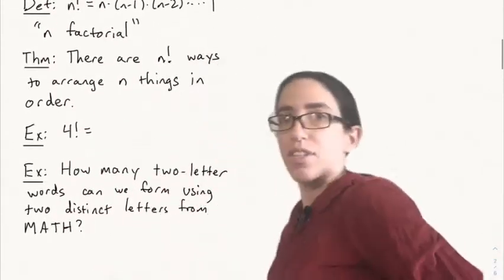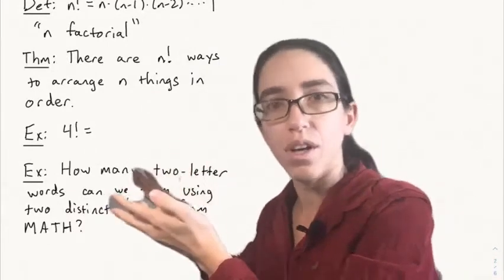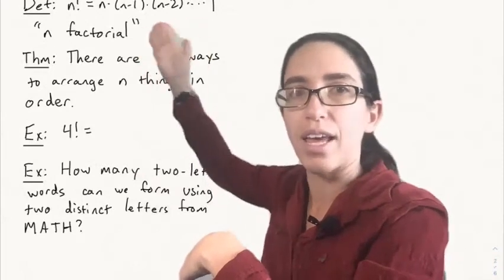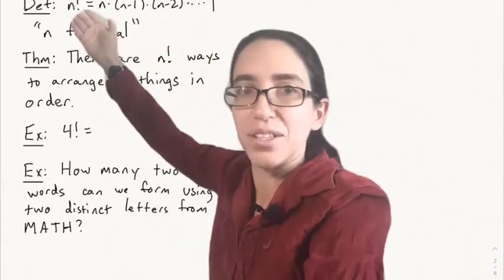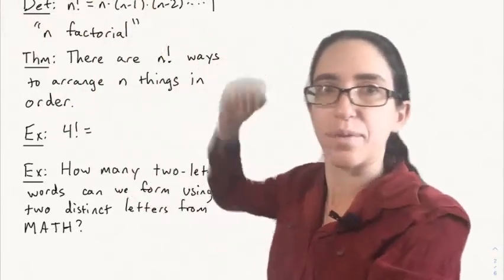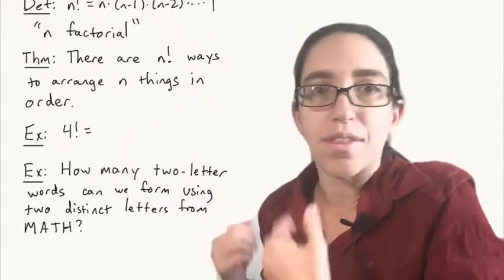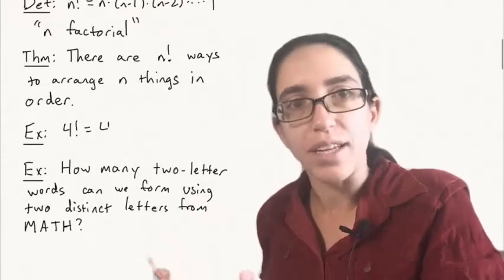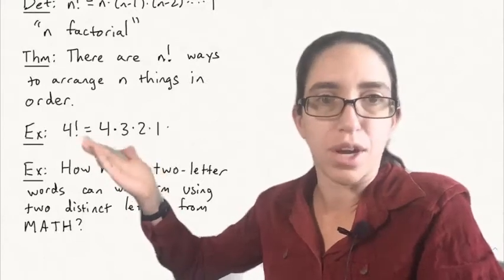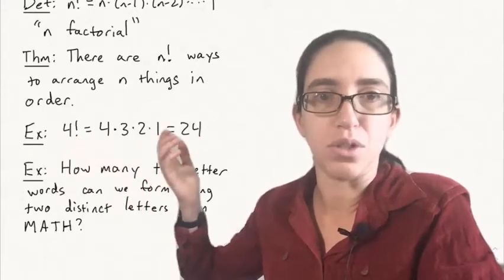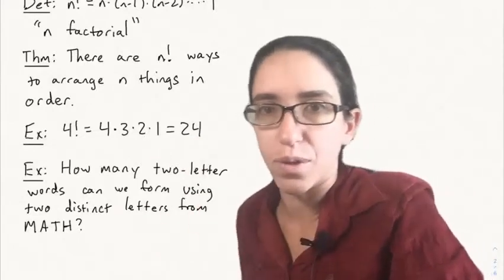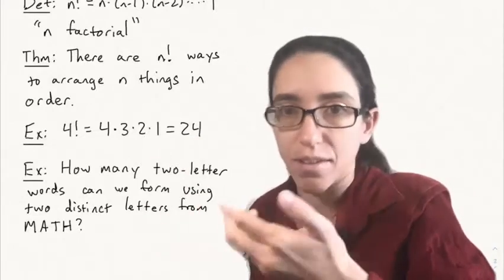So that saves us a lot of work. It's so important that we give it its own symbol. We define N factorial — written N with an exclamation point, pronounced "N factorial" — to be the product of the numbers from N down to one. The theorem is that there are N factorial ways to arrange N things in order. For example, four factorial is four times three times two times one, which is 24, just as we saw above.